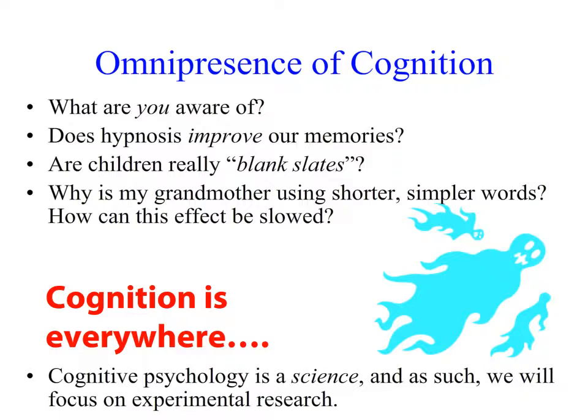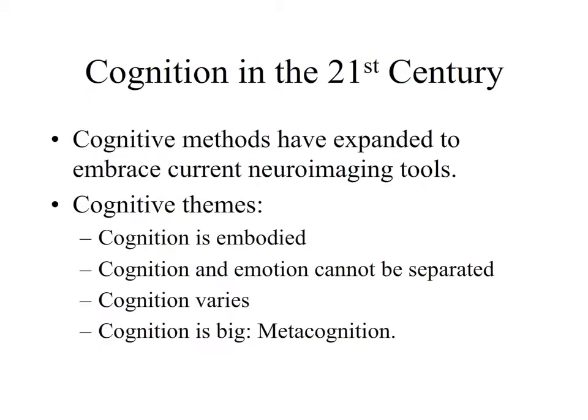Cognition and cognitive psychology is a science, and as such we're going to focus on an experimental approach to addressing these questions. Where is cognition going in the 21st century? We have a new set of tools to explore how the mind operates. Currently, we're embracing neuroimaging tools such as magnetic resonance imaging — now used to study brain function, called functional magnetic resonance imaging. We're also using other neuroimaging tools such as PET, MEG, and EEG.